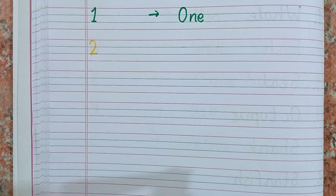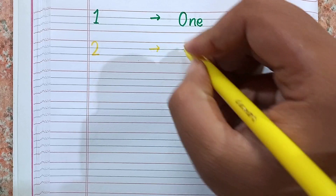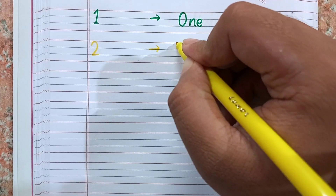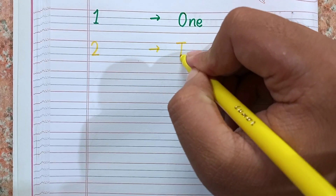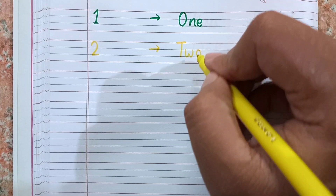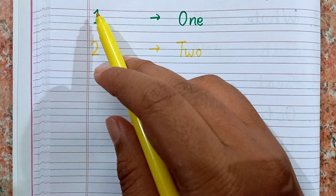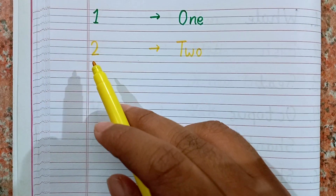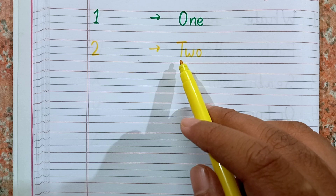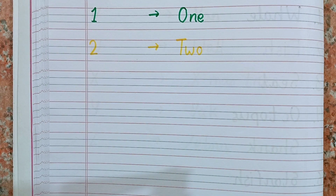This is 2. Now I am going to write the spelling. Remember the spelling, kids: T-W-O. This is 2. 1, 2, and the spelling of 2 is T-W-O. After 2 the next number will be 3.